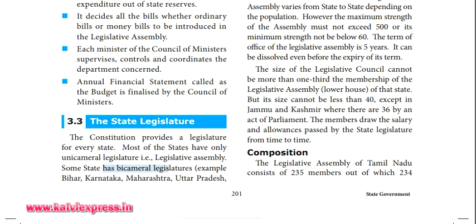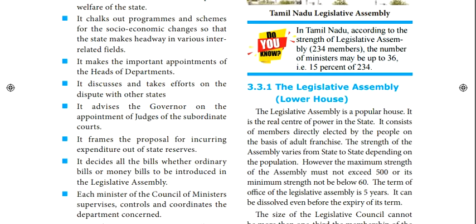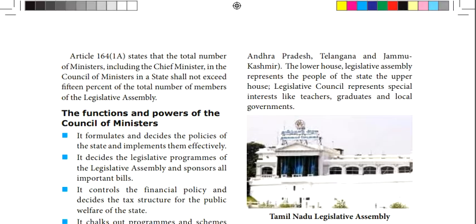So what are the states that have bicameral legislatures? Bihar, Karnataka, Maharashtra, Uttar Pradesh, Telangana, Jammu and Kashmir, and Andhra Pradesh. These states have the concept of bicameral legislature.